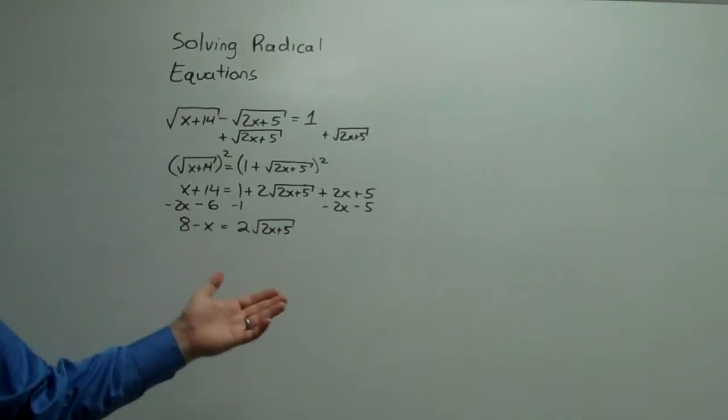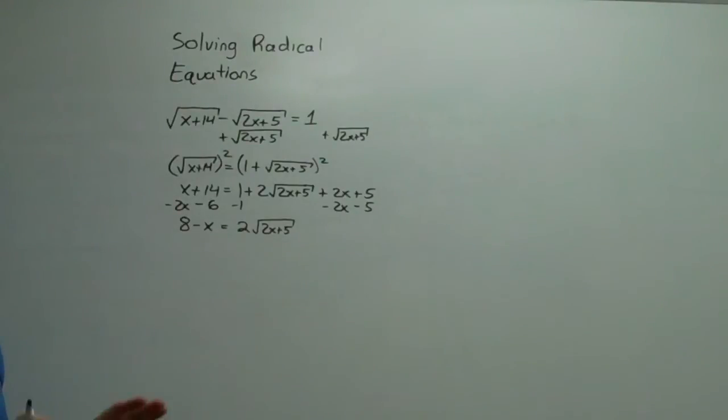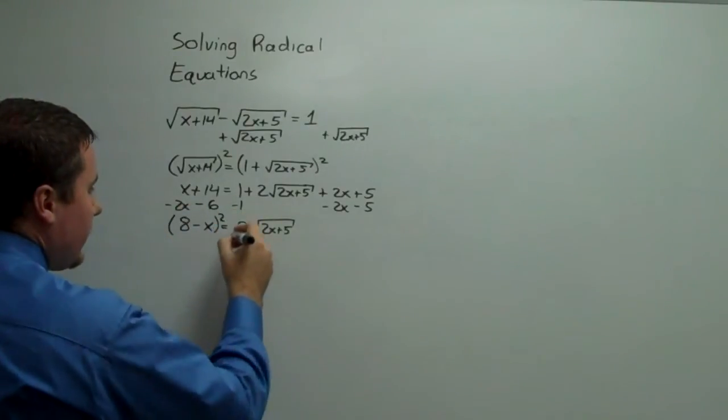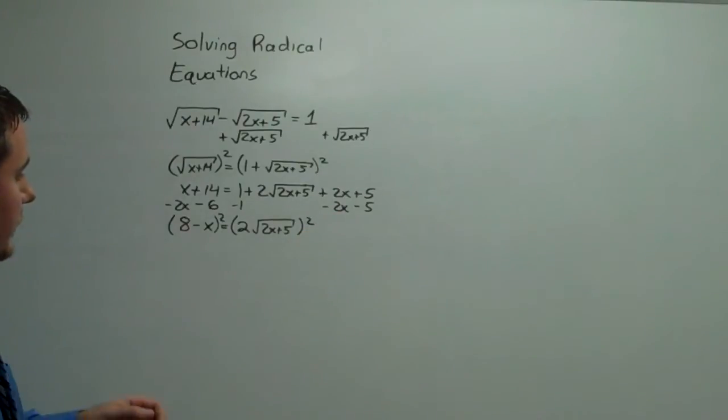Now we have another radical isolated. You can divide the 2 out, but then you're going to have fractions, so let's stay away from that. If we're careful how we square things, then everything will be taken care of. So when we square things...